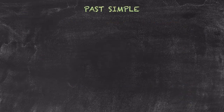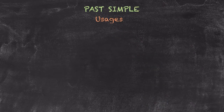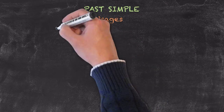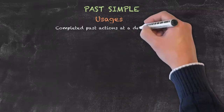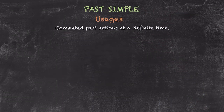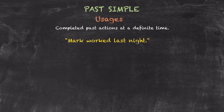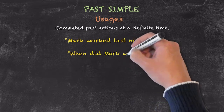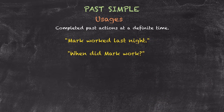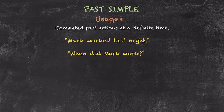As previously mentioned, the usage for the past simple tense is when you want to talk about completed actions in the past at a definite timeframe. So we have sentences like, Mark worked last night. He worked in the past. When was it? Last night. We can also ask questions. When did Mark work? Although the time isn't mentioned in the question, what we're implying is the time will be mentioned in the answer.